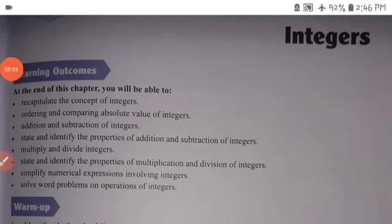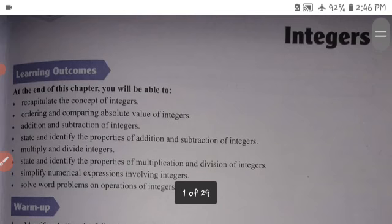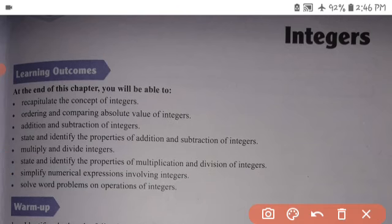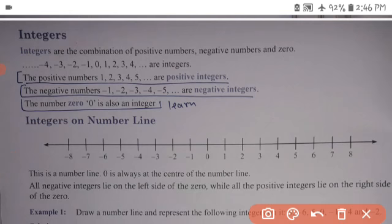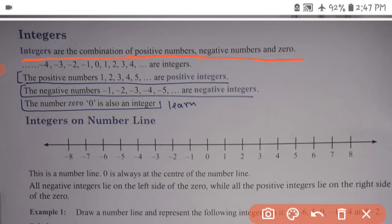Good morning students, today we start the chapter Integers. Integers are the combination of positive numbers, negative numbers, and zero.